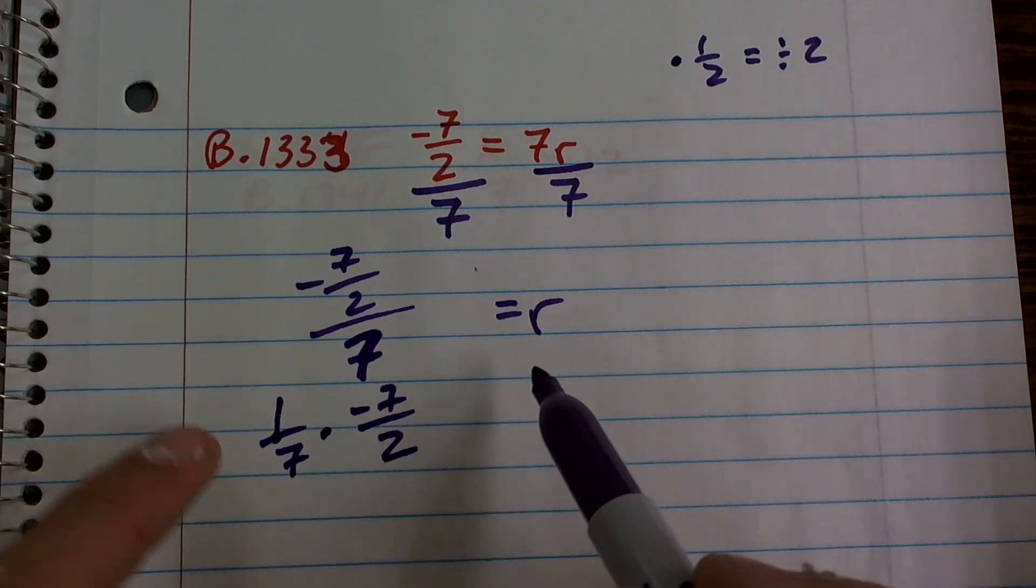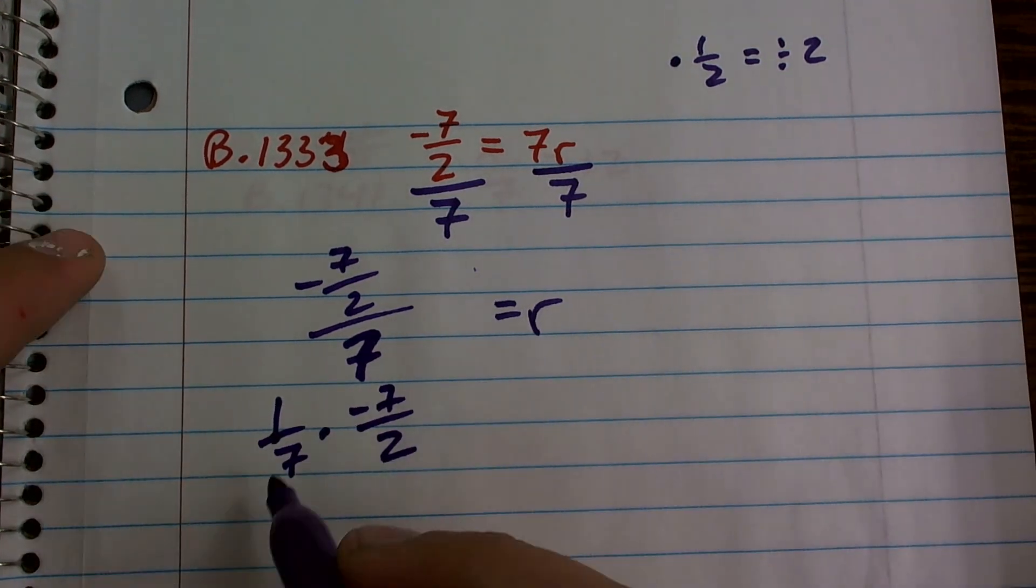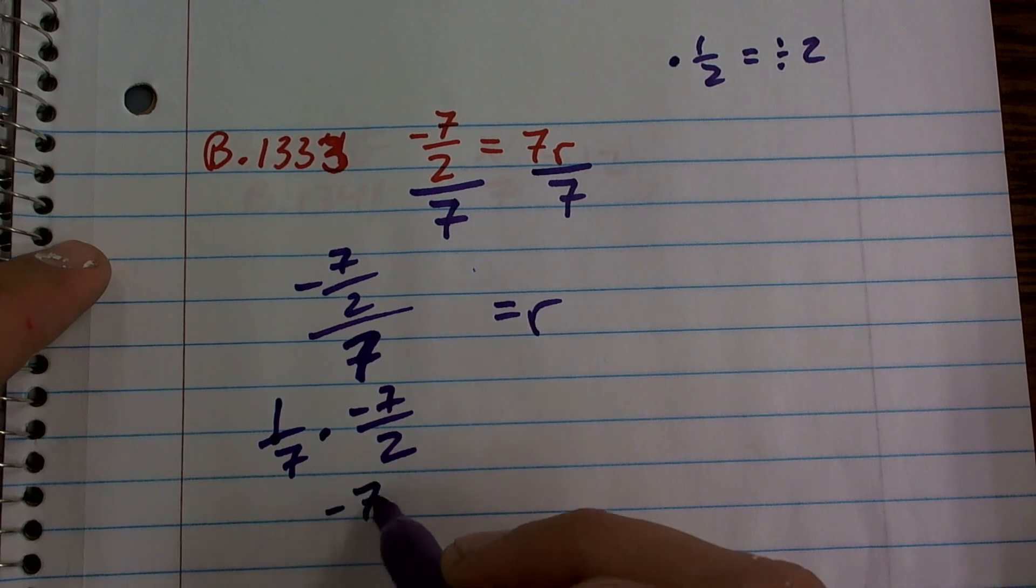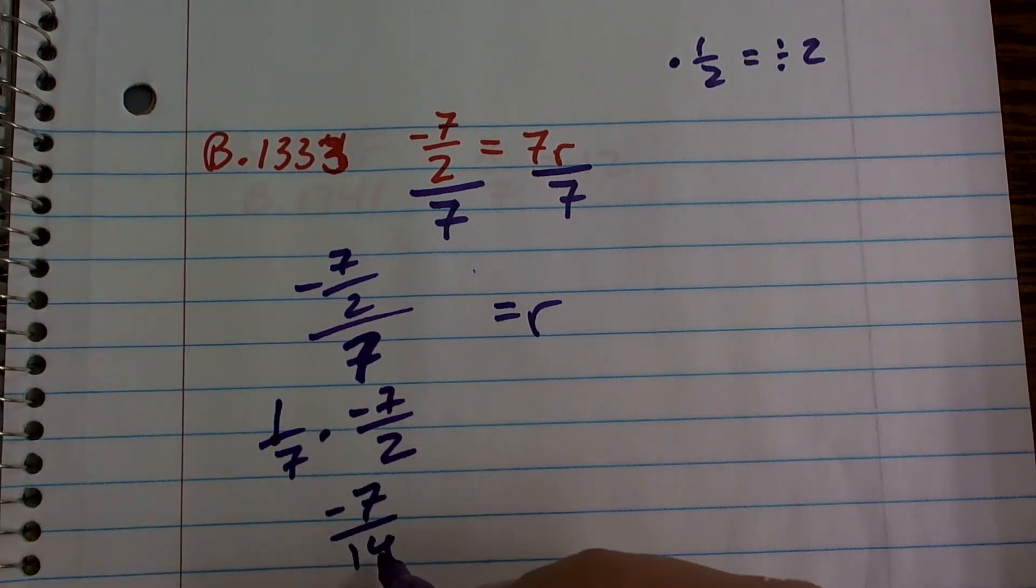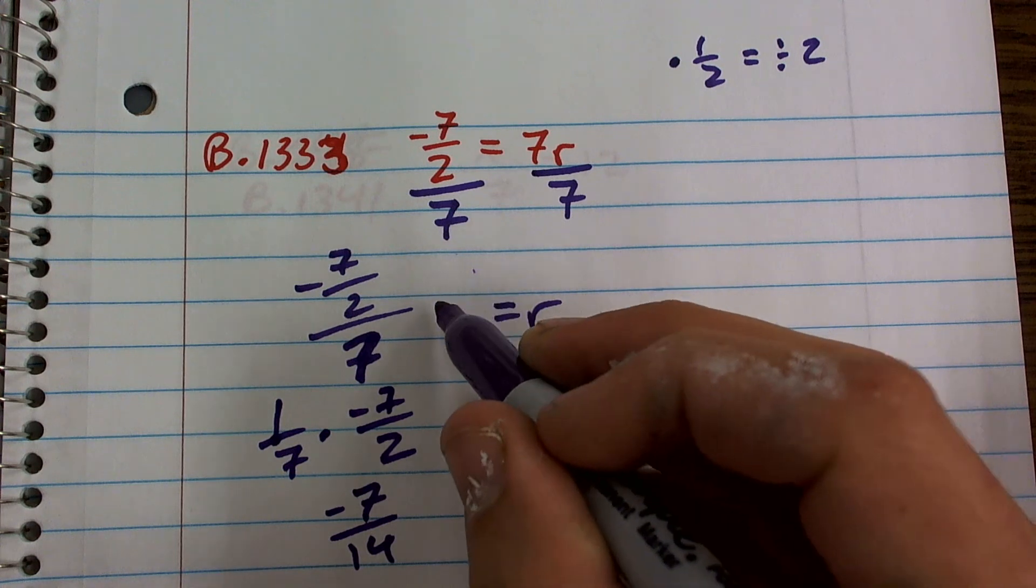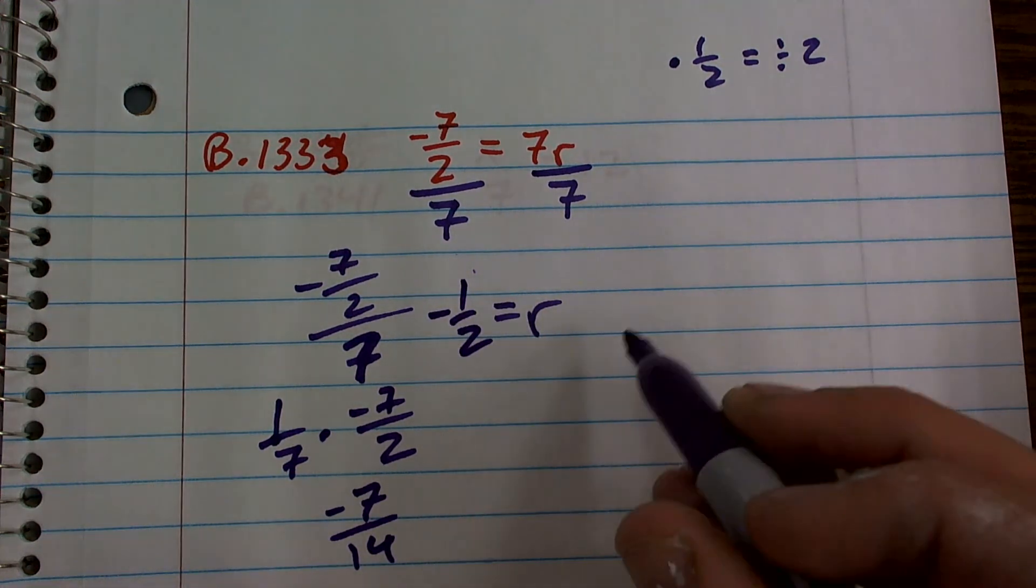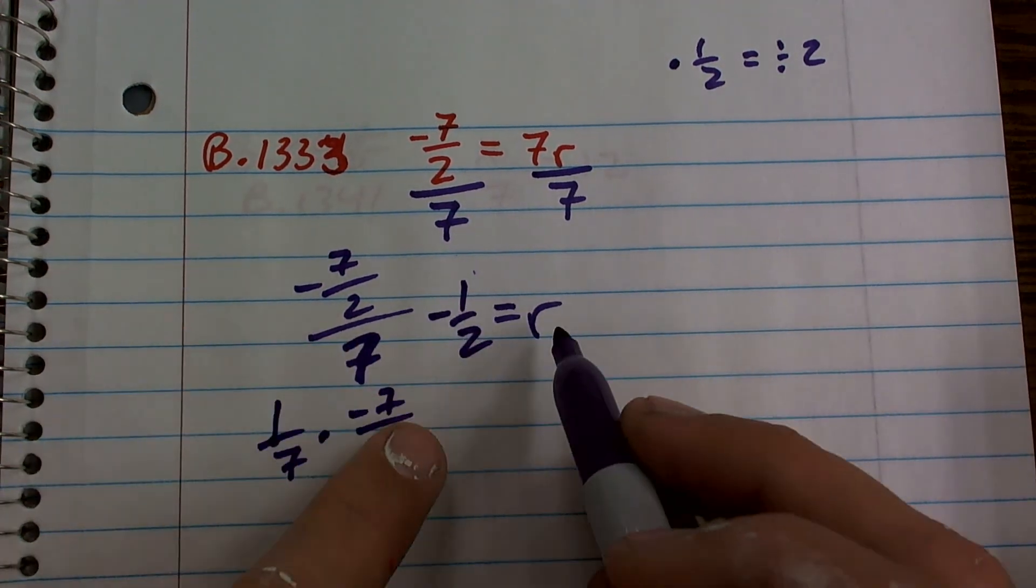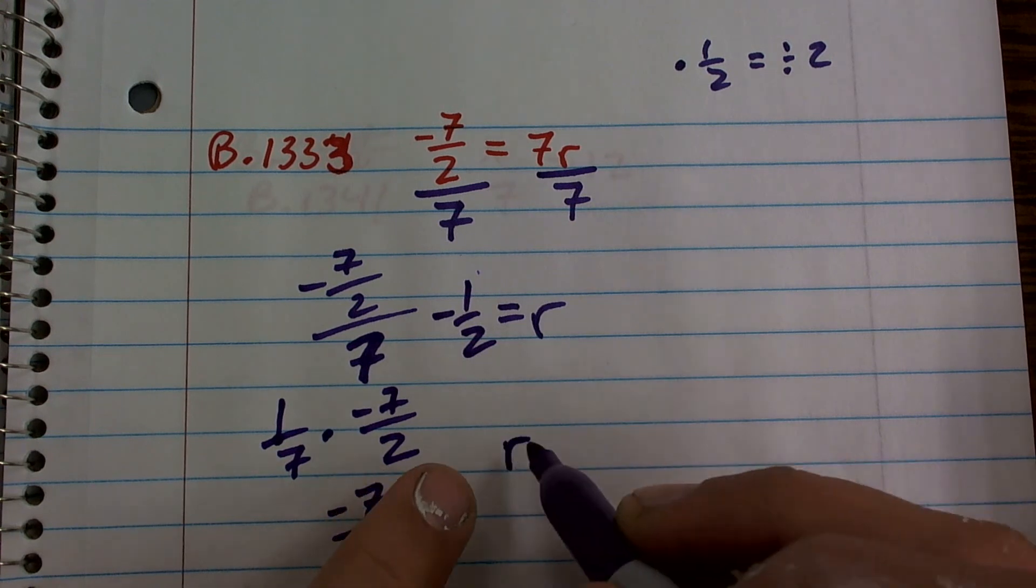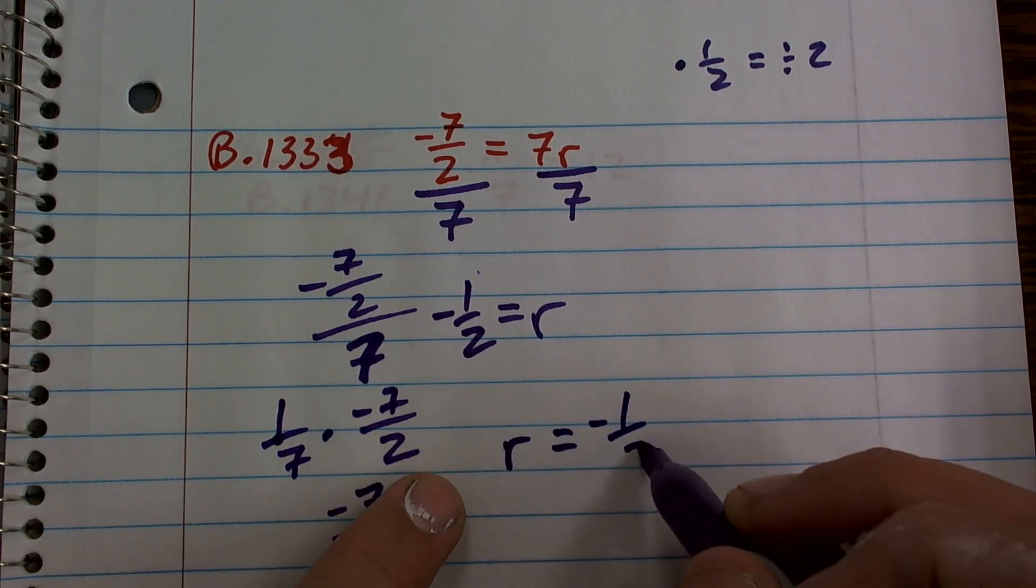Then what I can do is you can rewrite it. You can see that the 7s cancel out, or if you just want to multiply it out, you get negative 7 over 14, which reduces to a negative 1 half. So now you could say negative 1 half is equal to r, or as we like to write, r is equal to negative 1 half.